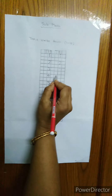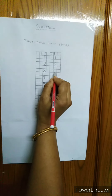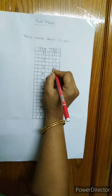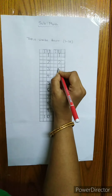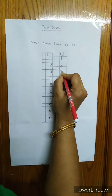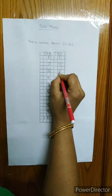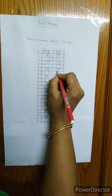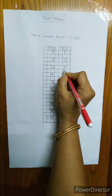Now, the next number is 3. This is 3. How to write 3? Two half circles. I will start from here, touch the up line, go to the middle point, draw another half circle, touch the down line, and go up.